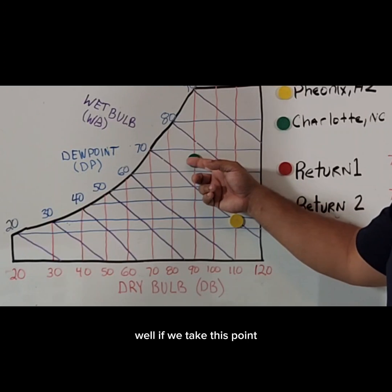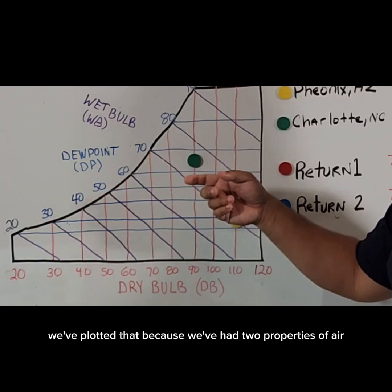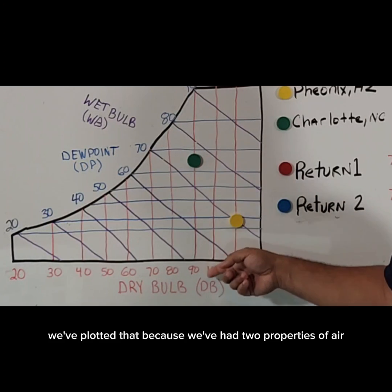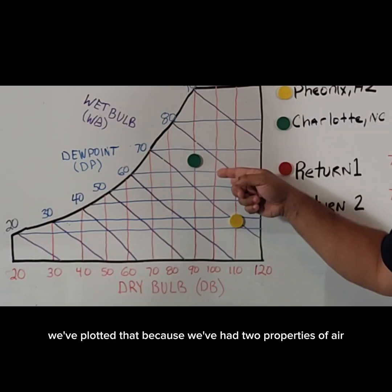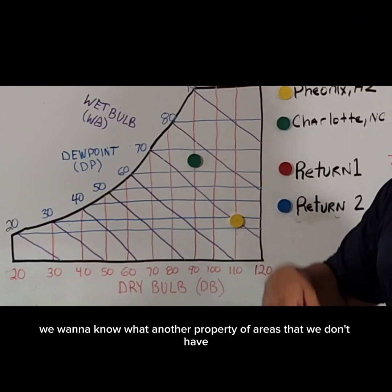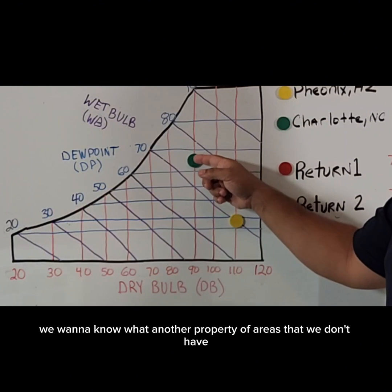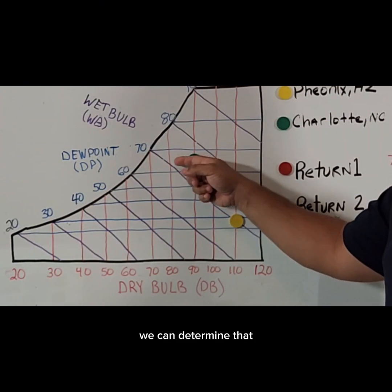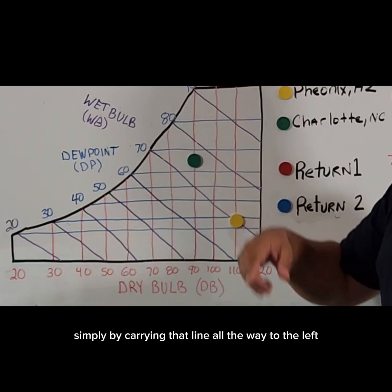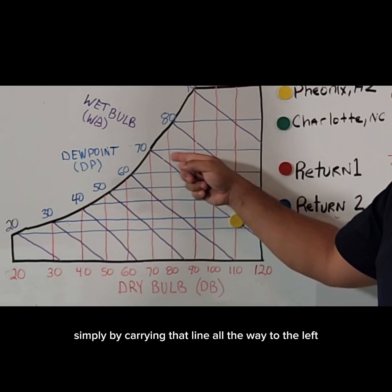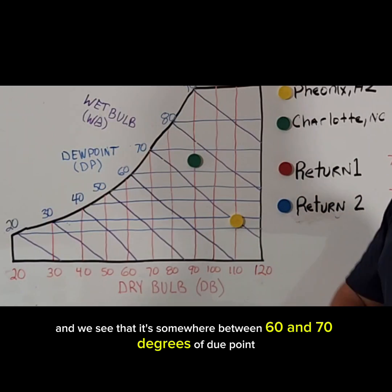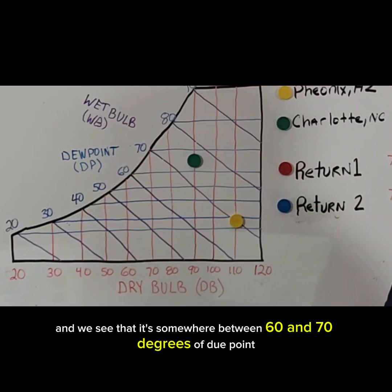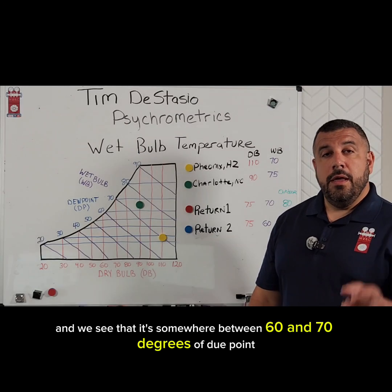Well, if we take this point — we've plotted that because we've had two properties of air — we want to know what another property of air is that we don't have. We can determine that simply by carrying that line all the way to the left, and we see that it's somewhere between 60 and 70 degrees of dew point.